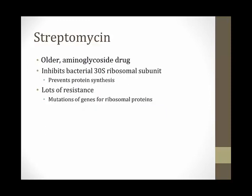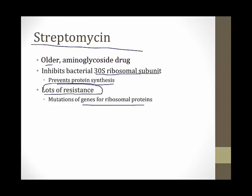Streptomycin was the first drug ever developed for tuberculosis, in the 1940s, and the first aminoglycoside ever developed. It inhibits the bacterial 30S ribosomal subunit, preventing protein synthesis. However, there is tremendous resistance to this drug through mutations in genes for ribosomal proteins, so streptomycin is rarely used anymore.